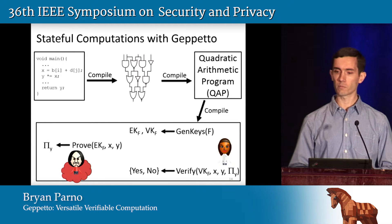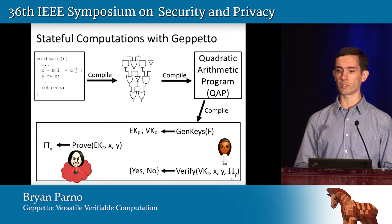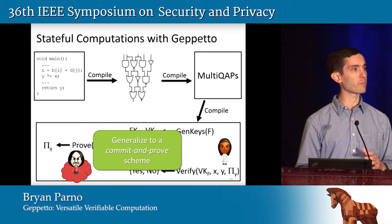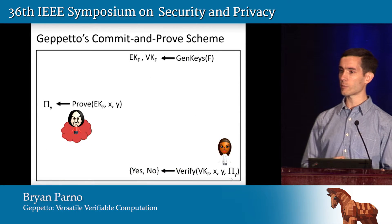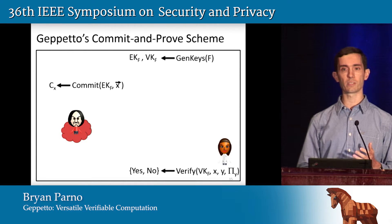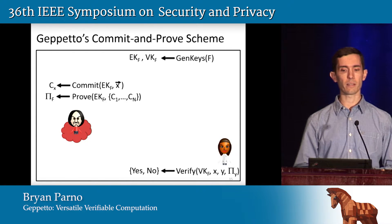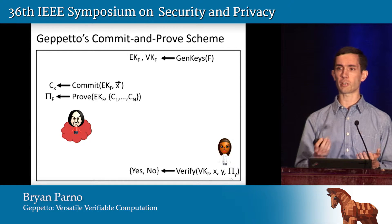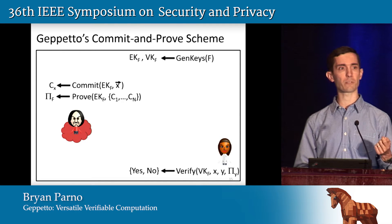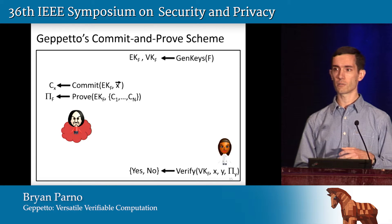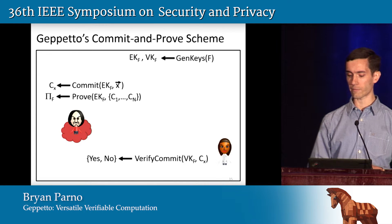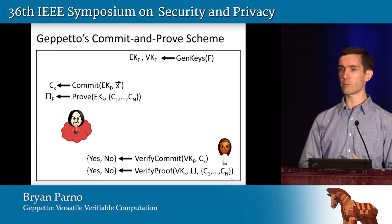With Geppetto we address this in two ways. First, we generalize the encoding scheme to create what we call a multi-QAP, and use that to generalize the cryptographic protocols to create a commit-and-prove scheme. The prover can commit to a series of inputs and create a constant-size commitment representing a large set of data. You can then use that commitment along with other commitments to generate a proof that the values those commitments correspond to are a correct evaluation of the function. The prover can commit to different values and use those commitments in many different proofs, saving effort on computations that share state. Similarly, the verifier can verify a commitment once and then verify many proofs that make use of that commitment.